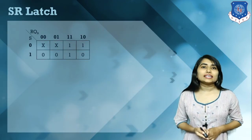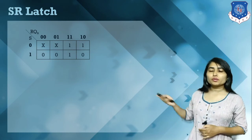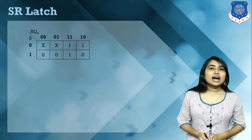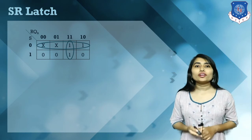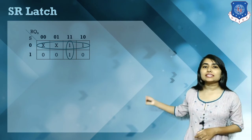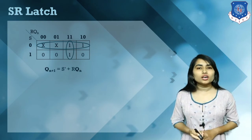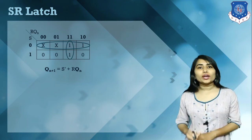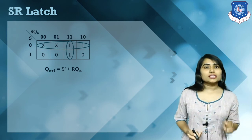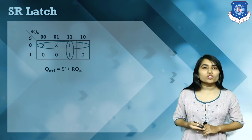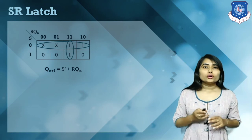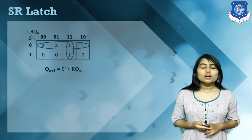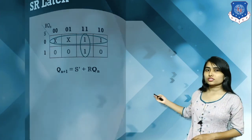Now we have the characteristic equation of the SR latch for active low. Using a K-map in terms of S, R, and Qn, we can derive the characteristic equation. For the active low SR latch, the characteristic equation is Qn+1 = S' + R·Qn, compared to the active high equation Qn+1 = S + R'·Qn. This is the characteristic equation of the SR latch using two cross-coupled NAND gates. Thank you.